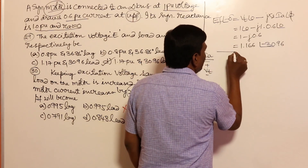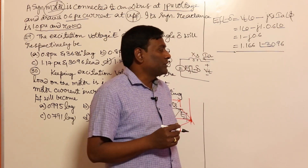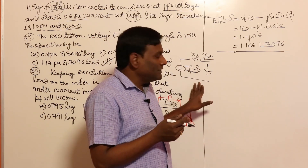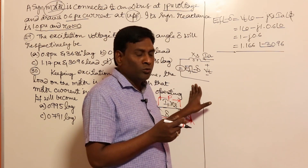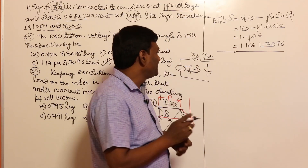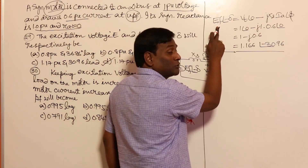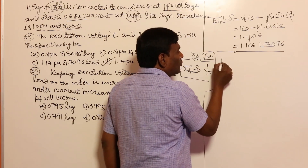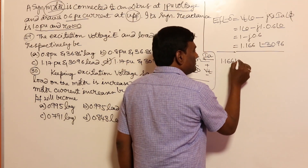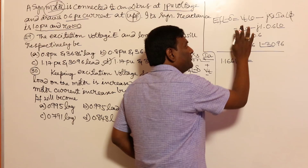At starting you may feel it is a lengthy solution, but it is not — that's why I have taken two questions. Whatever we did before, we are going to do the same thing using the same equations. In the second case, EF is going to be the same as the first case: 1.166 at angle delta2 equals VT minus j·Xs·IA.